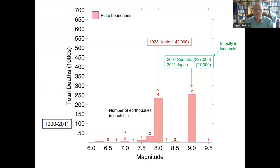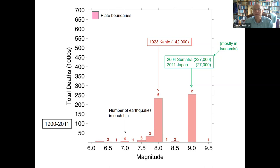One puzzle: looking at a histogram of earthquake size versus deaths over the last hundred years, two columns stand out. The two magnitude-9 earthquakes — Sumatra 2004 and Japan 2011 — killed about a quarter million people combined, but nearly all died in the tsunami, not the earthquake itself. The magnitude-8 column is mostly contributed by the 1923 Tokyo earthquake.